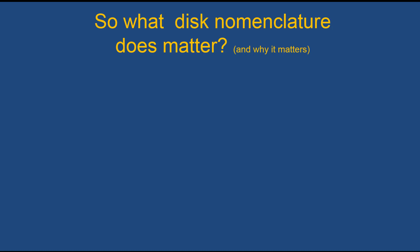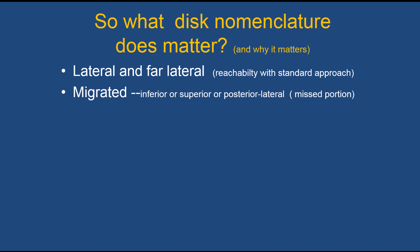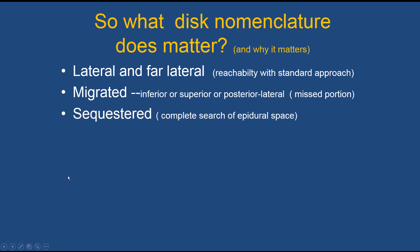What disc nomenclature does matter? Discs that are lateral or far lateral are often missed on dictations. A far lateral disc may not only be missed, but even if identified it may be difficult to reach by the normal surgical approach — the whole facet may need to be removed. If a disc is migrated inferiorly or posteriorly, it may escape detection by the surgeon at surgery, particularly if the migrated disc is fragmented into small pieces. For sequestered discs — removed from the parent disc and migrated superiorly or inferiorly — it is important to do a complete search of the epidural space.